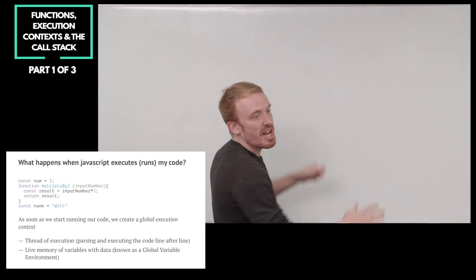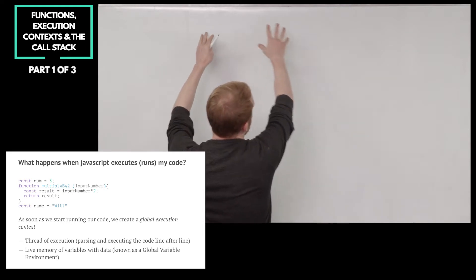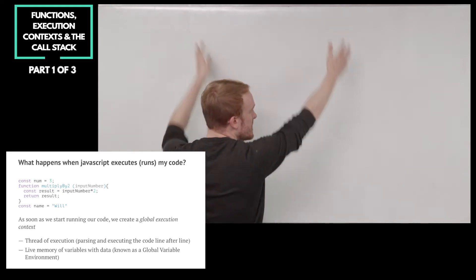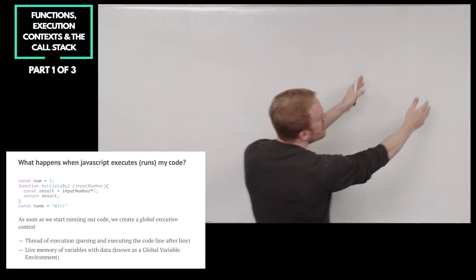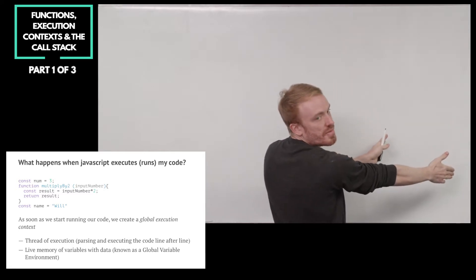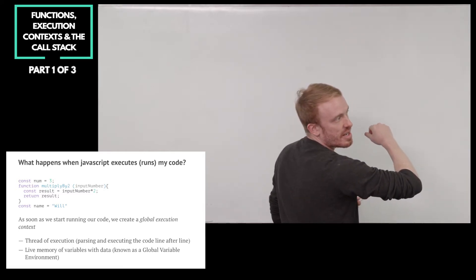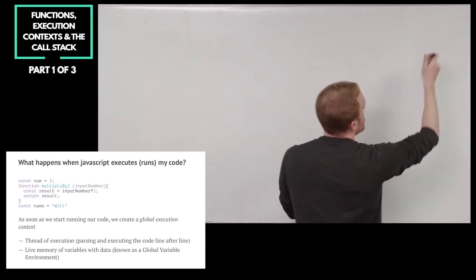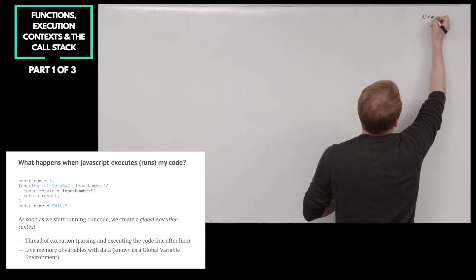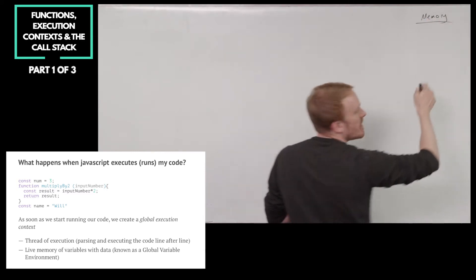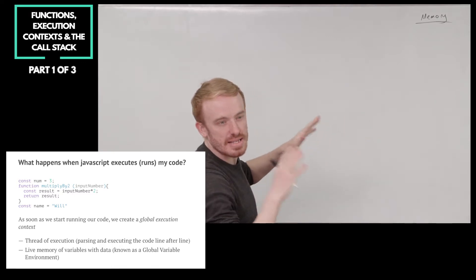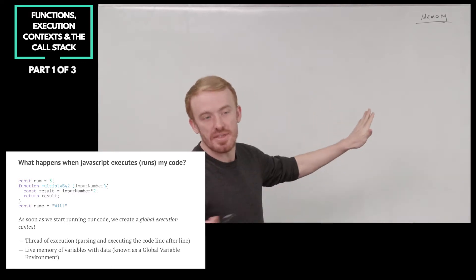And we're going to represent the thread of execution. That means going through the code line by line on this side here. And then we're going to store any of the variables or functions we declare on the right hand side here. This is going to be our memory. And we're going to represent these all on the whiteboard so we can really follow ourselves exactly how our code is executing and miss nothing.